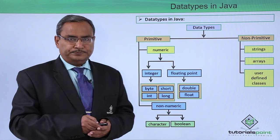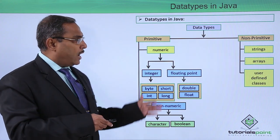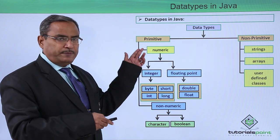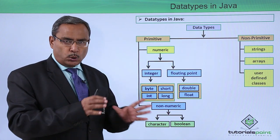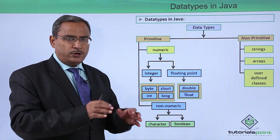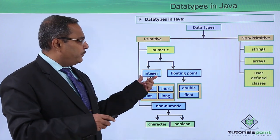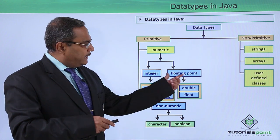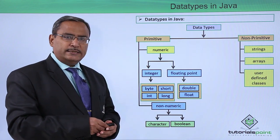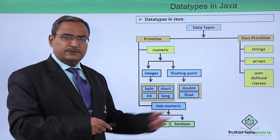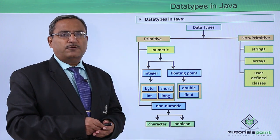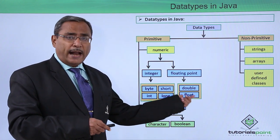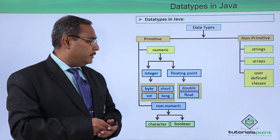Here we have a representation of how data types are categorized. Under primitive data types, which are pre-known to Java, we have numeric types. In the numeric category, there are two sub-categories: integer and floating point. For floating point, there are two types: double, which is 64-bit or eight bytes, and float, which is 32-bit or four bytes.